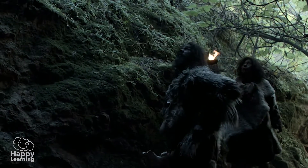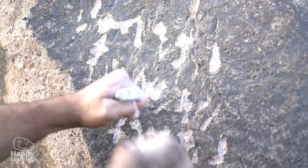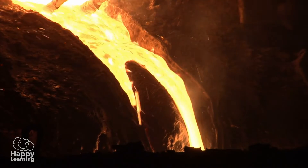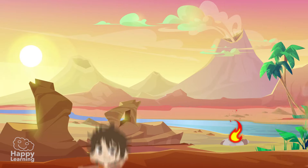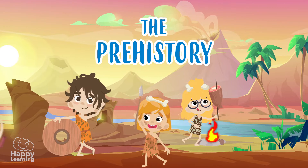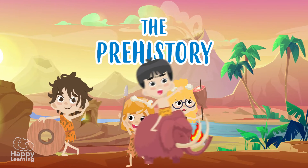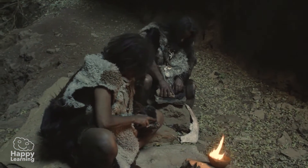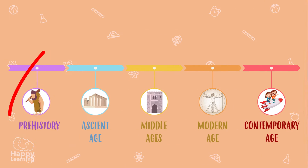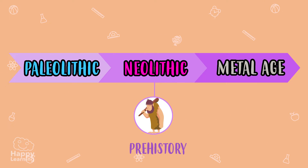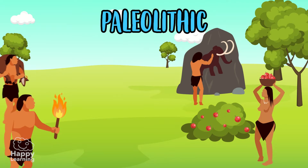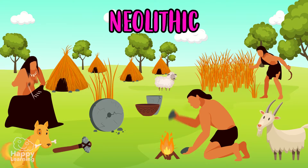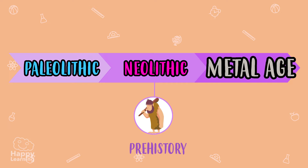Hello friends, welcome to a new Happy Learning video. Today we're going to learn about our prehistory. The first thing we need to know is that our prehistory is divided into three different periods: Paleolithic, Neolithic, and the Metal Ages.